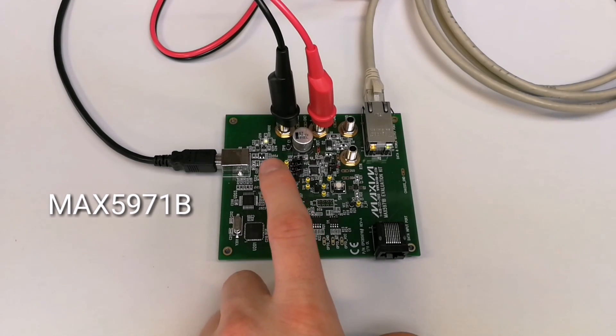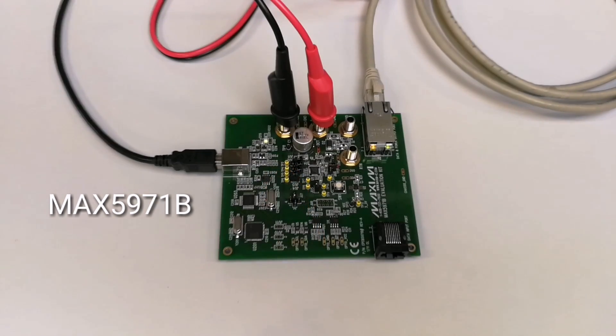Notice the input polarity of the MAX 5971B. Ground is connected to the positive of our supply and VEE is connected to our power supply ground.